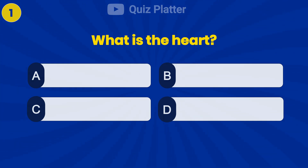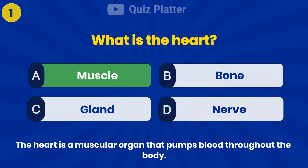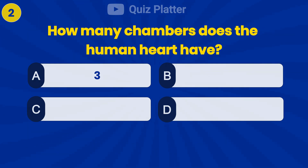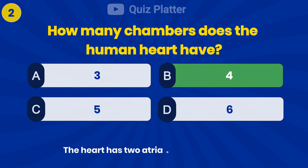What is the heart? Answer A: Muscle. How many chambers does the human heart have? Answer B: Four.